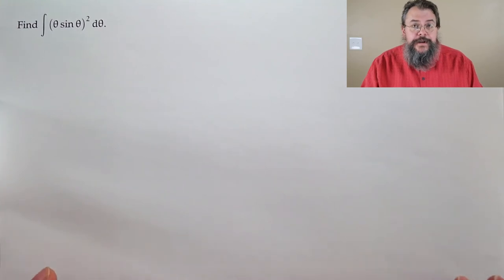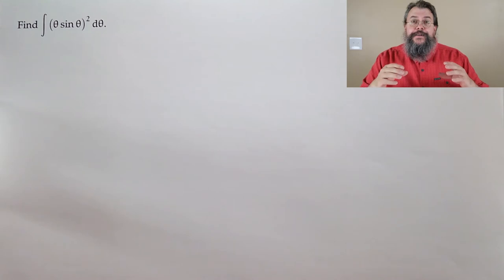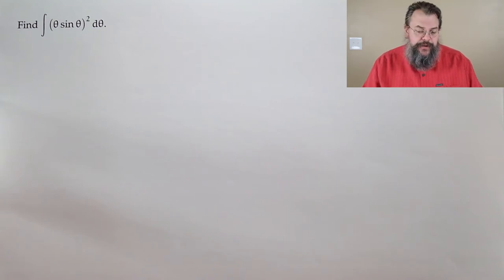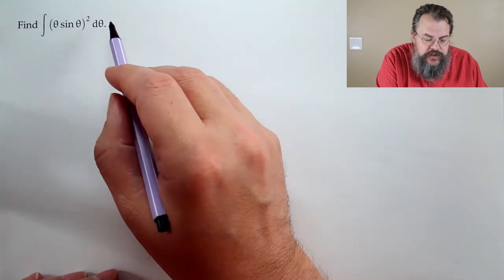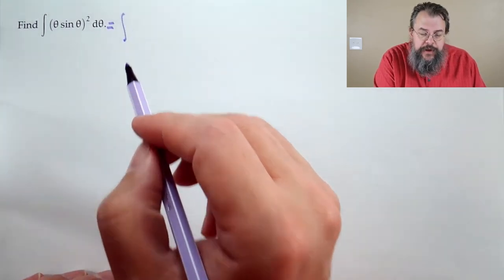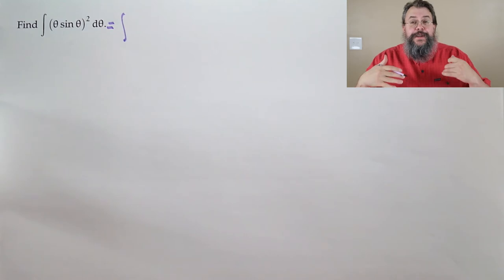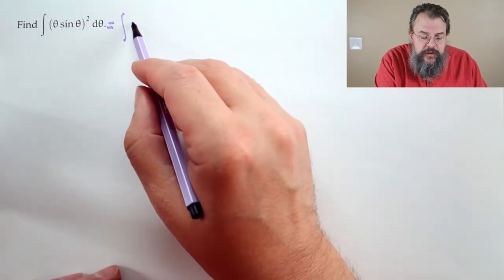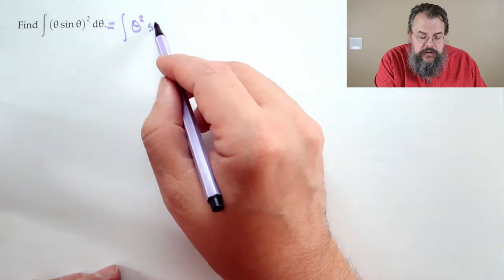Our next problem: find the integral of (θ·sin(θ))² dθ. This is the same as ∫θ²·sin²(θ) dθ. We've been playing this game for a while, so we know: θ² is the part we take derivatives of. But there's one small detail — how do you integrate sin²(θ)? It's not so easy.